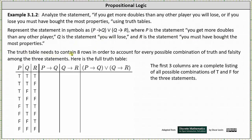The truth table needs to contain eight rows in order to account for every possible combination of truth or falsity among the three statements. The possible combinations are: true-true-true, true-true-false, true-false-true, true-false-false, false-true-true, false-true-false, false-false-true, and false-false-false.